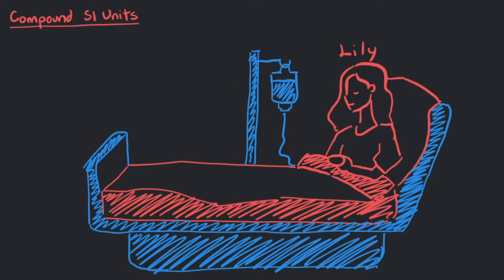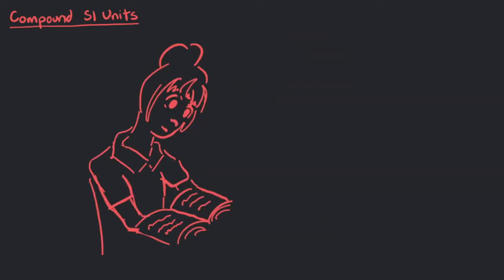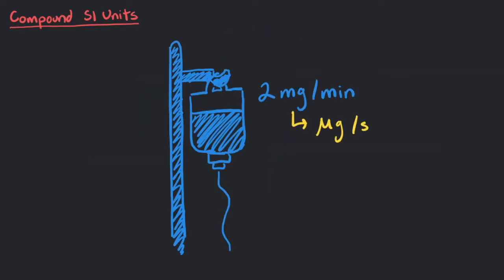Our friend Lily recently got out of surgery and needs medication to relieve her pain. The doctor delivers the pain medication through an IV at a rate of 2 mg per minute. The doctor needs to check that this will be safe for Lily's body, but the journal has values written in micrograms per second. Help the doctor out! What is this IV's rate in micrograms per second?